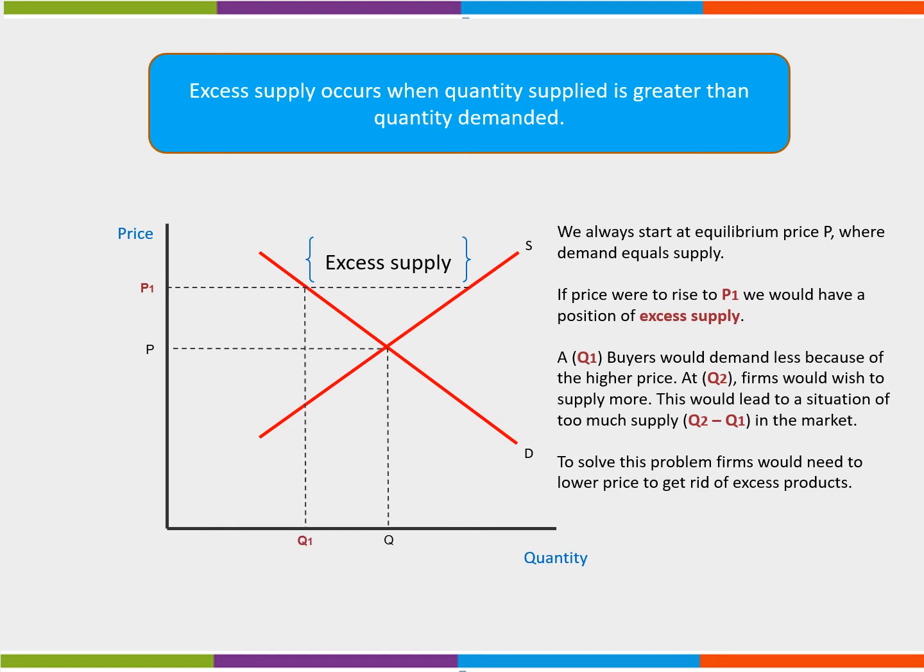At Q1, buyers would demand less because of the higher price. At Q2, firms would wish to supply more. This would lead to a situation of too much supply, Q2 minus Q1, in the market. To solve this problem, firms would need to lower price to get rid of excess products.